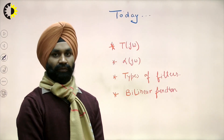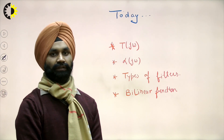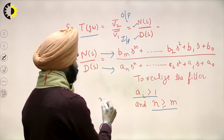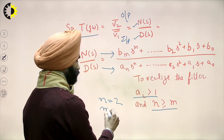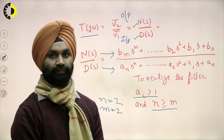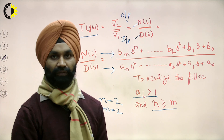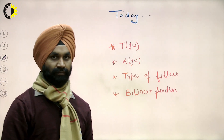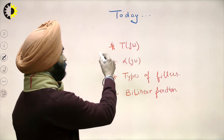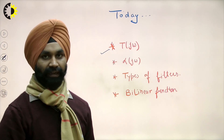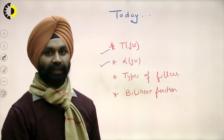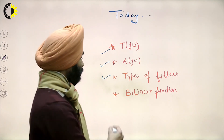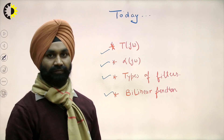So today we have discussed what a transfer function is, and based on that, what attenuation is. Depending on attenuation, we have defined different types of filters. In the next lecture, we will discuss the transfer function further and what bilinear functions are. Thank you.